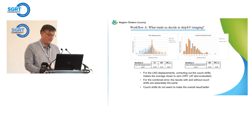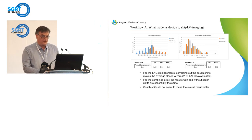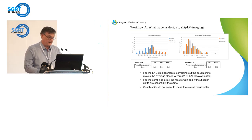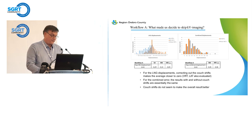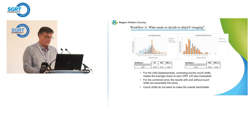We also looked at vertical and lateral displacements with similar results. We also looked at the combined displacement — the resulting magnitude combining vertical, lateral, and longitudinal — shown in the histogram to the right. Looking at the average and the distribution, to a very high degree it looks like, in our workflow at least, the results with and without couch shifts are basically the same. There is not much of a difference. This leads us to the conclusion that in our situation, doing the couch shifts actually didn't really improve the treatments.